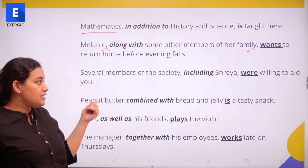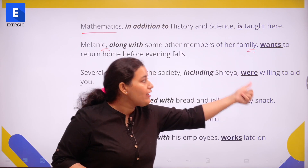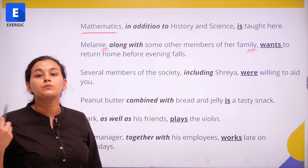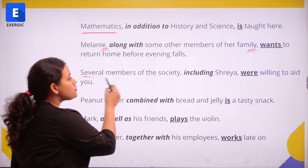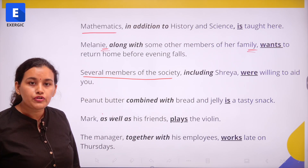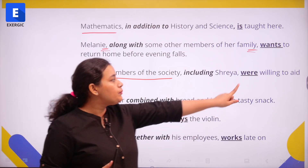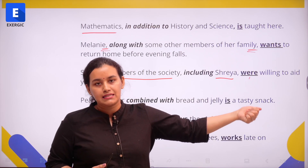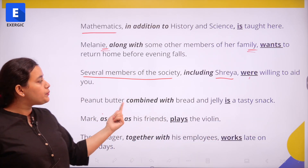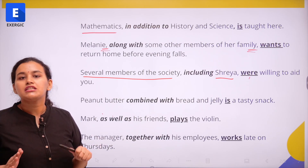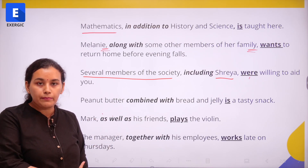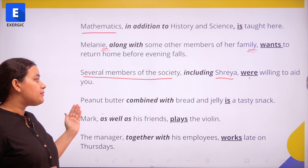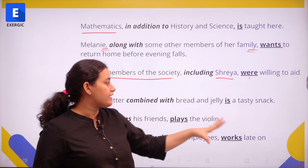Several members of the society including Shreya were willing to aid you. In this case the main subject, several members of the society, is plural, so the verb also takes the plural form. Next: Peanut butter combined with bread and jelly is a tasty snack. Here the phrase is not put inside commas, but that does not change the subject-verb agreement — it is still correct to write it together.